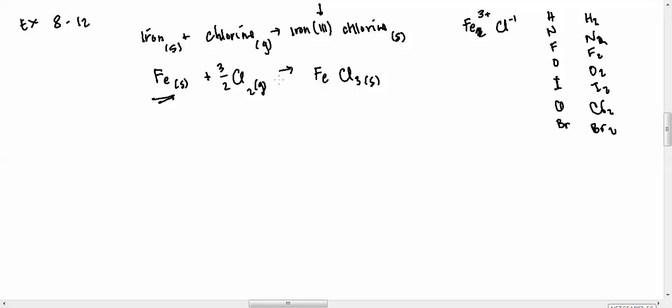Now, there's no such thing as a coefficient that is a fraction. So, what we need to do is kind of clear out the fraction. And to do that, you just simply multiply through by the denominator. Multiply everything by 2. So, I have 2 Fe solid plus 3 Cl2 gas gives me 2 FeCl3 solid. And actually, I have a balanced equation.